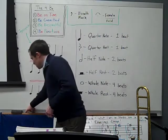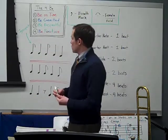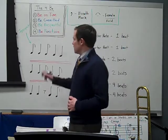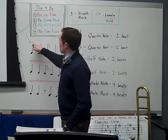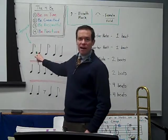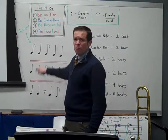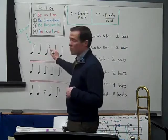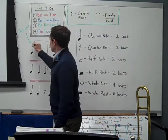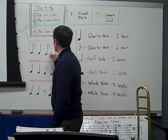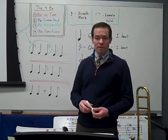Let me show you what syncopate looks like rhythmically. If we were to find syncopate, it is a lone eighth note with this sad little tail hanging off of it. So a lone eighth note followed by a quarter note followed by another sad lone eighth note. These three notes put together are our syncopate rhythm.